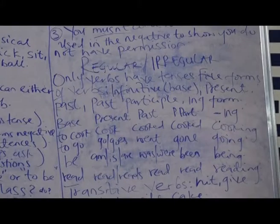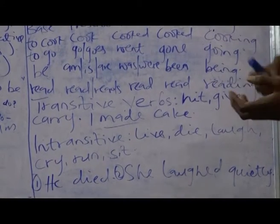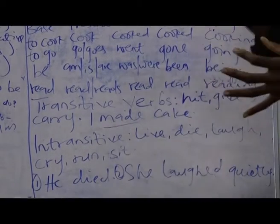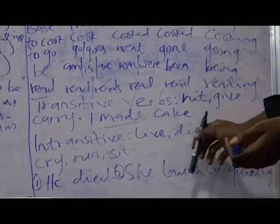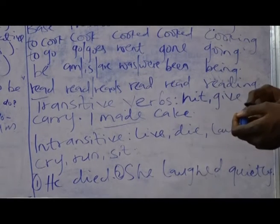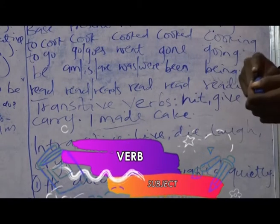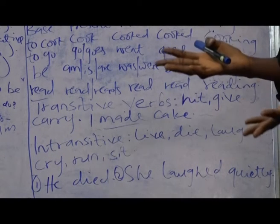Now, let's move over to transitive and intransitive verbs. What is a transitive verb? A transitive verb is a type of verb that takes an object. Examples: hit, give, carry — these are verbs that must have objects. For instance, 'I hit a chair.' To identify transitive verbs, they answer the question 'what?' If I tell you 'I hit,' you would ask 'hit what? What did you hit?'